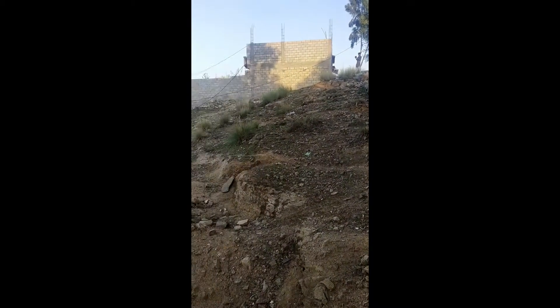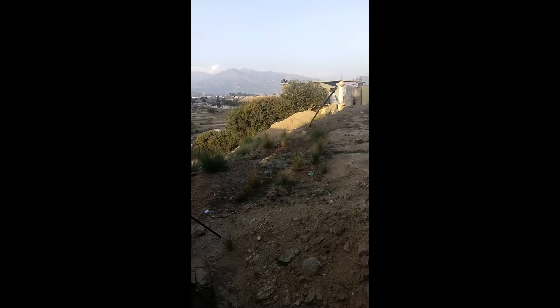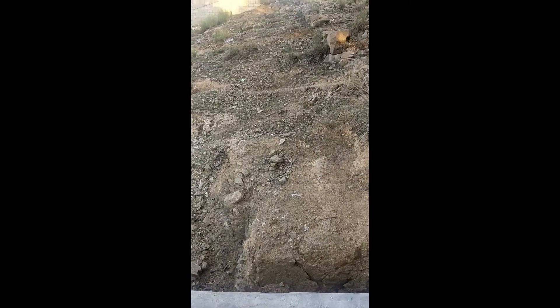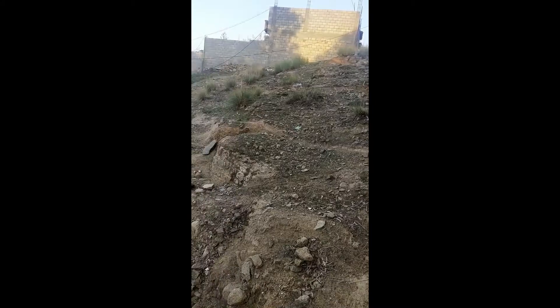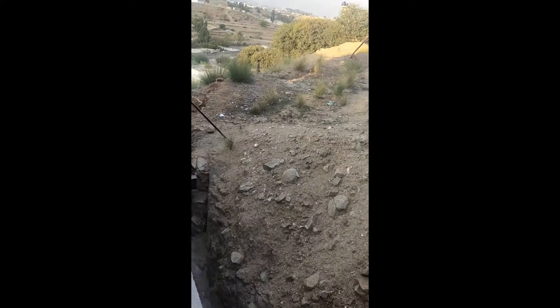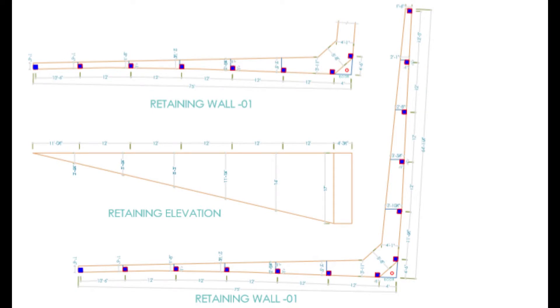Now you can see the real site area which has different elevations and different points. You can clearly see the 35 feet height elevation. For this problem we have planned to make two retaining walls on the site. To start the project, we planned to construct the retaining wall first. This is the detail of the first retaining wall, which has a specified height and grade of steels, and it will help to retain the soil.